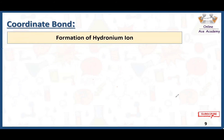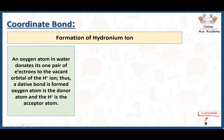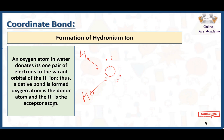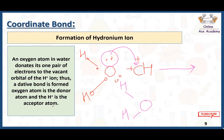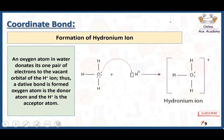Another example is the formation of the hydronium ion. An oxygen atom in water donates one pair of electrons to the vacant orbital of the hydrogen ion — thus an additive bond is formed. Oxygen is the donor atom and hydrogen is the acceptor. Water has two non-bonding pairs on oxygen. The hydrogen cation has an empty orbital, and one lone pair from oxygen is shared with it. As a result, a coordinate covalent bond forms and we observe a hydronium ion.